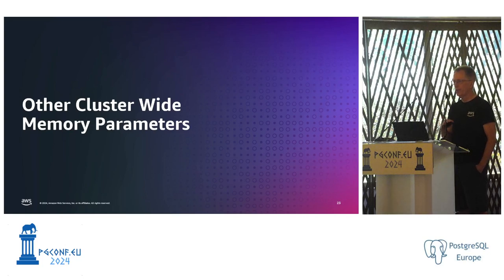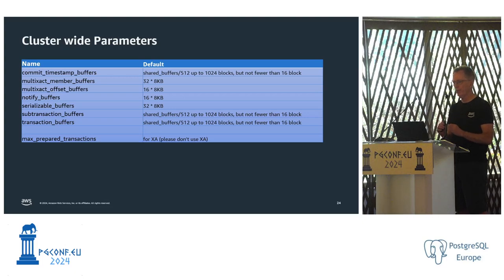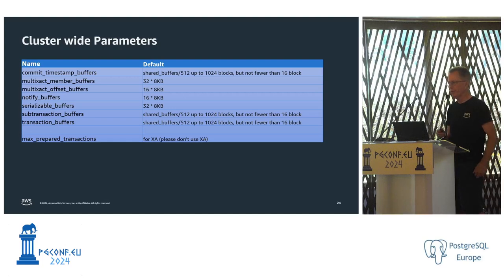Let's talk about shared buffers as a cluster-wide parameter — there are some others as well. A lot of these have been introduced recently with PostgreSQL 17, which is really good because many used to be fixed values. These are cluster-wide, so you don't have to worry about them if you set them to a reasonable value, but understand they will be in addition to what was already allocated and may allocate a bit more in PG17 than in 16. As a note: on max prepared transactions, please don't use XA — you're going to have more problems than just memory tuning if you use that.